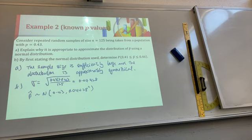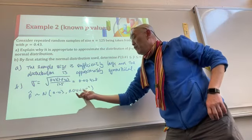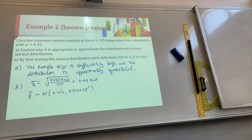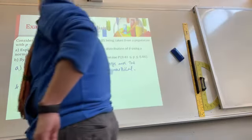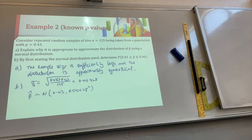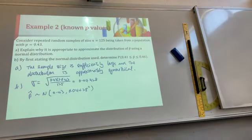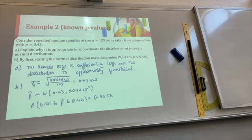Go back to the central limit theorem — write out that P hat is normally distributed. Work out sigma first, then write P hat. P hat is approximately normally distributed with a mean of 0.43 and standard deviation 0.04428. If you're given a fraction in the exam, use a fraction for exact numbers; if given as a decimal, keep it as a decimal. Using ClassPad, you can work out the probability between 0.41 and 0.46 is 0.4252 — four decimal places for your probability.